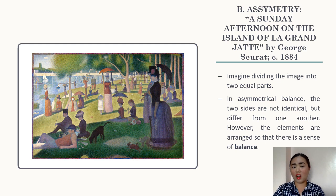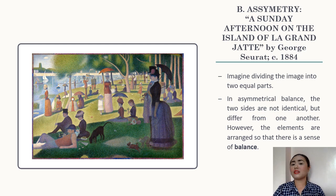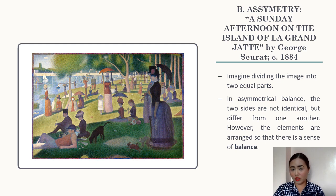On the left side, there are many images or elements but the sizes are small. On the right side, the people are fewer but the sizes are larger. Aside from that, the left side is lighter due to the presence of sunlight, while the right side is darker due to the presence of shadow from the shade of the trees.